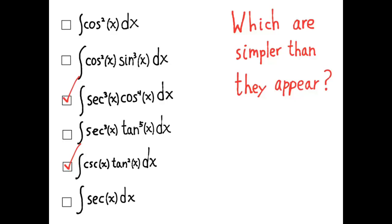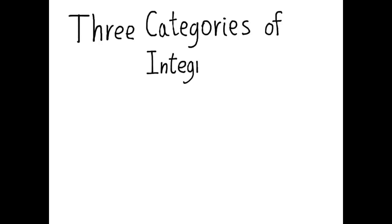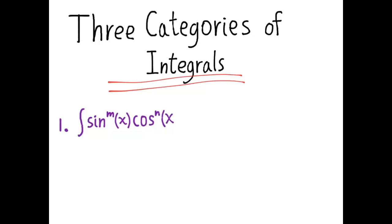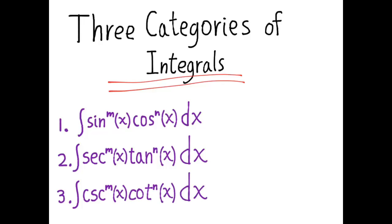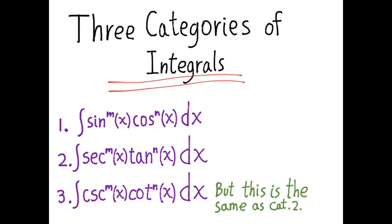Other combinations won't show up very often because they can often be rewritten as an integral in powers of secant and tangent, or an integral in powers of cosecant and cotangent, or an integral in powers of cosine and sine. Therefore, there are three categories of integrals we will discuss today. The first category is integrals of the form sine to the m power of x times cosine to the n power of x dx. The second form is powers of secant and tangent. The third form is powers of cosecant and cotangent. Actually, category 3 turns out to use the same procedures as category 2, so really there are only two categories.